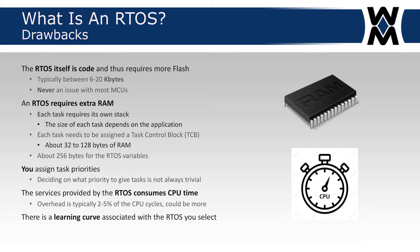The services provided by the RTOS consume CPU time. Typically, if you're using the RTOS properly, the RTOS service code takes between 2% and 5% of CPU cycles — though it could be more if you're overusing the API. There is also a learning curve associated with the RTOS you select. There are probably 100 different RTOSes in the world, and while the terminology will be somewhat similar, the implementation and APIs will be different — so you have to get up to speed with each one.